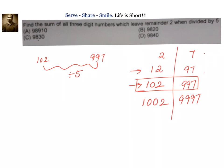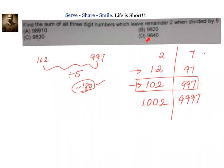Let us see approximately how many numbers there are between 102 and 997 that leave remainder 2 when divided by 5. Subtracting: 997 minus 102 is 895, divided by 5 gives approximately 180 numbers. These numbers are increasing in value starting from 100, so even if we take each number as equal to 100, that gives 100 times 180 equals 18,000, which is certainly greater than all the other options. Therefore option A is correct.